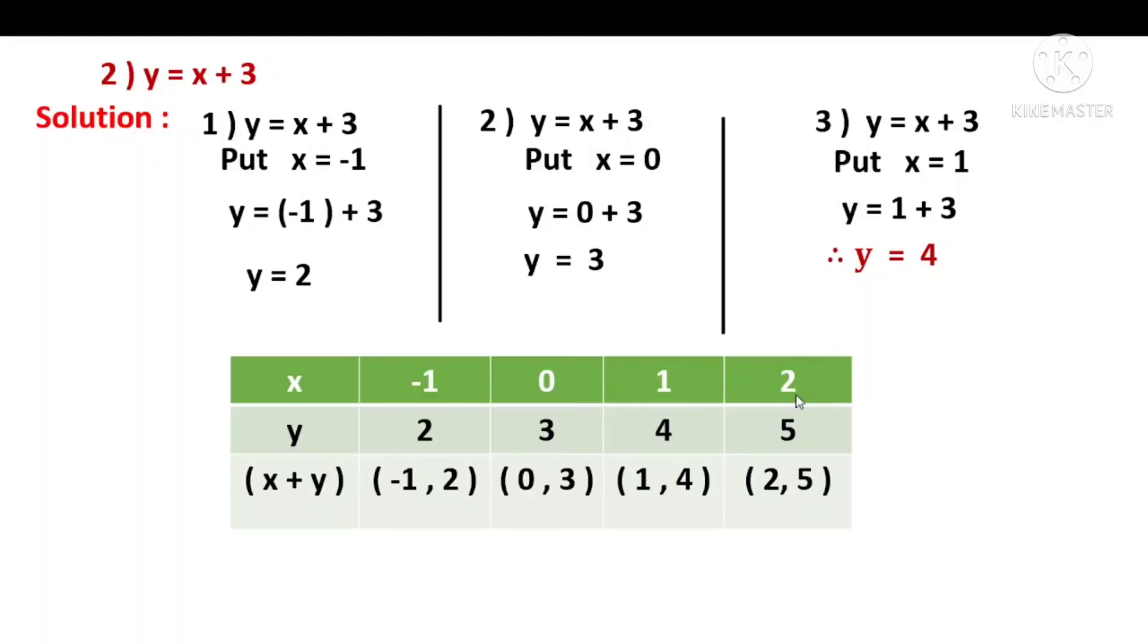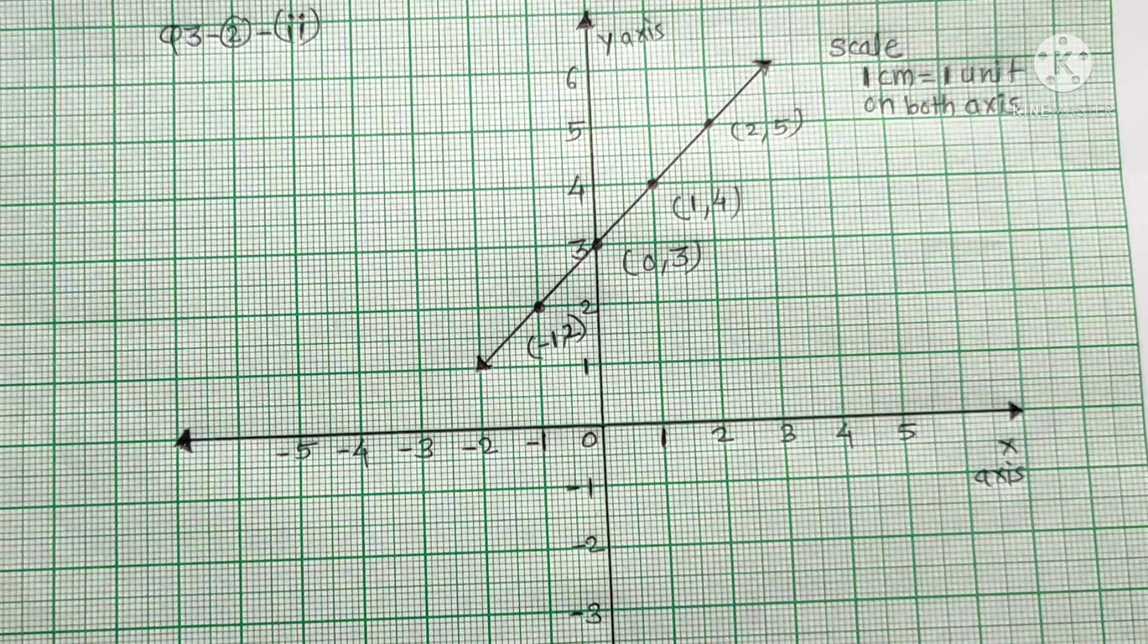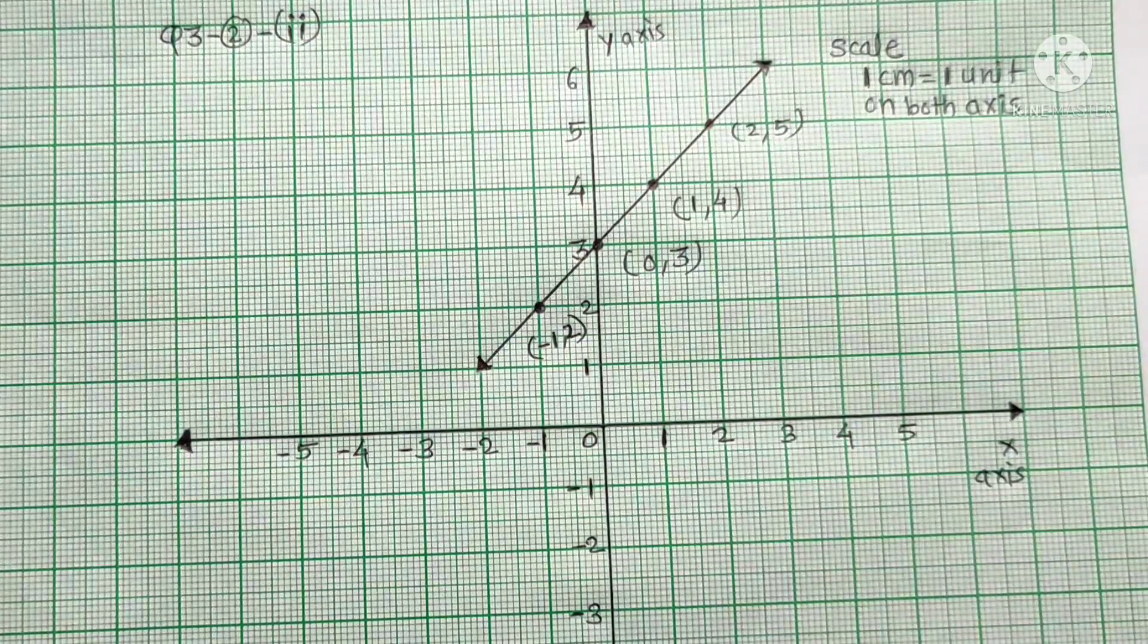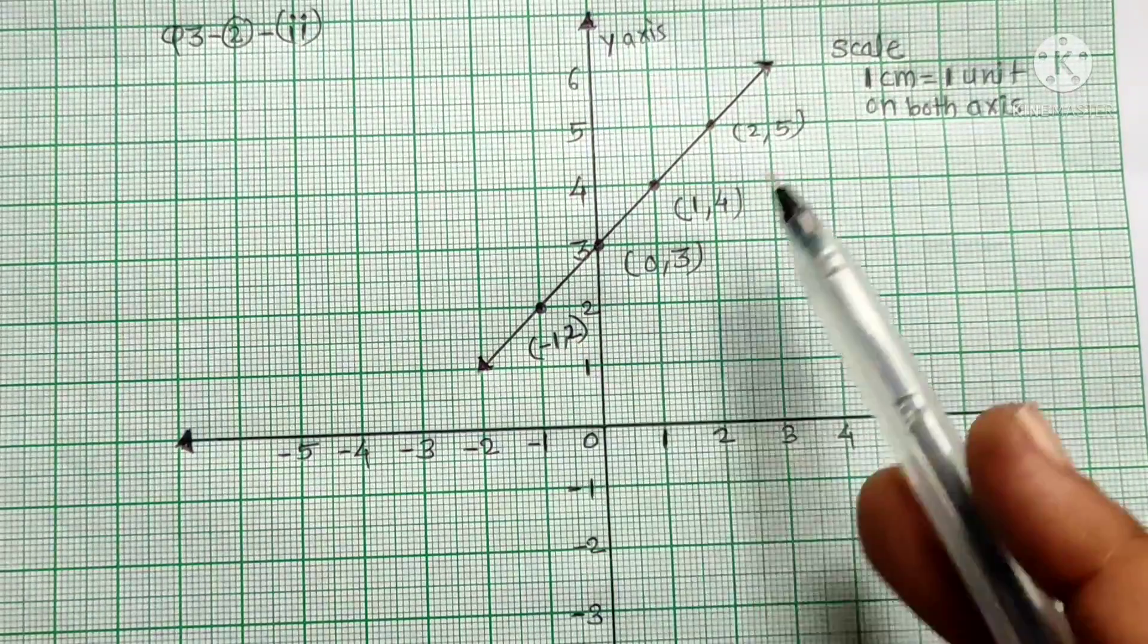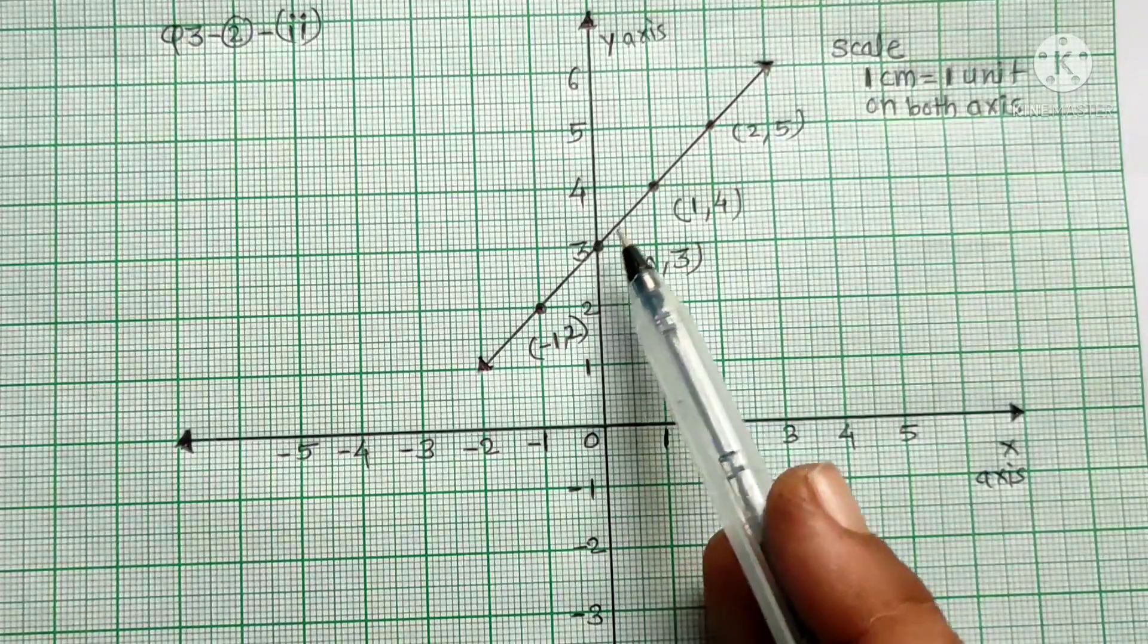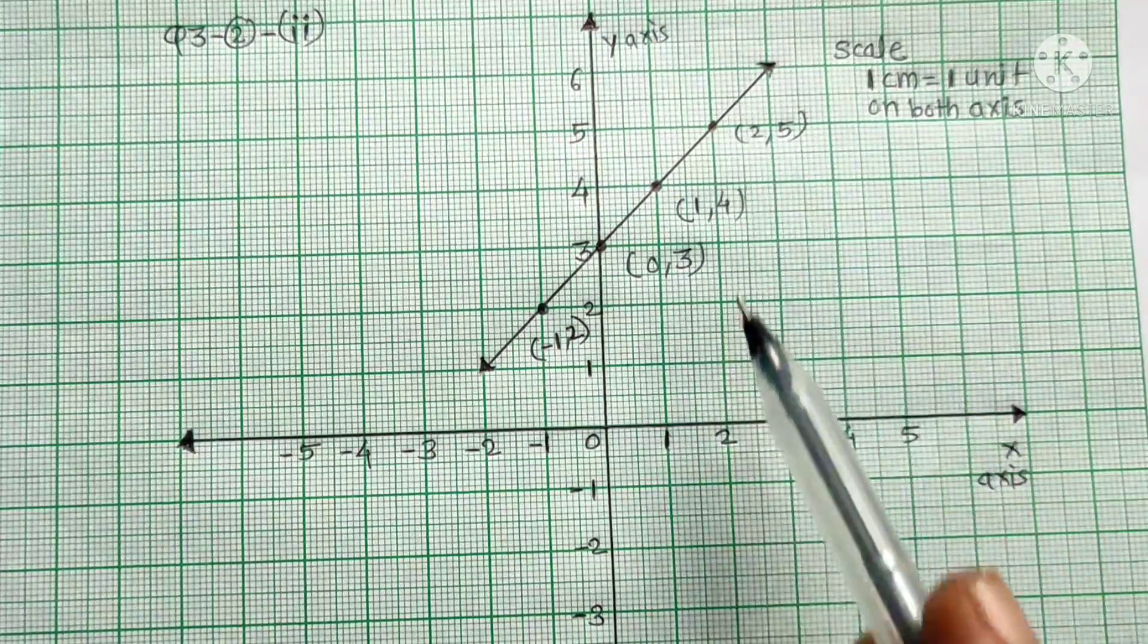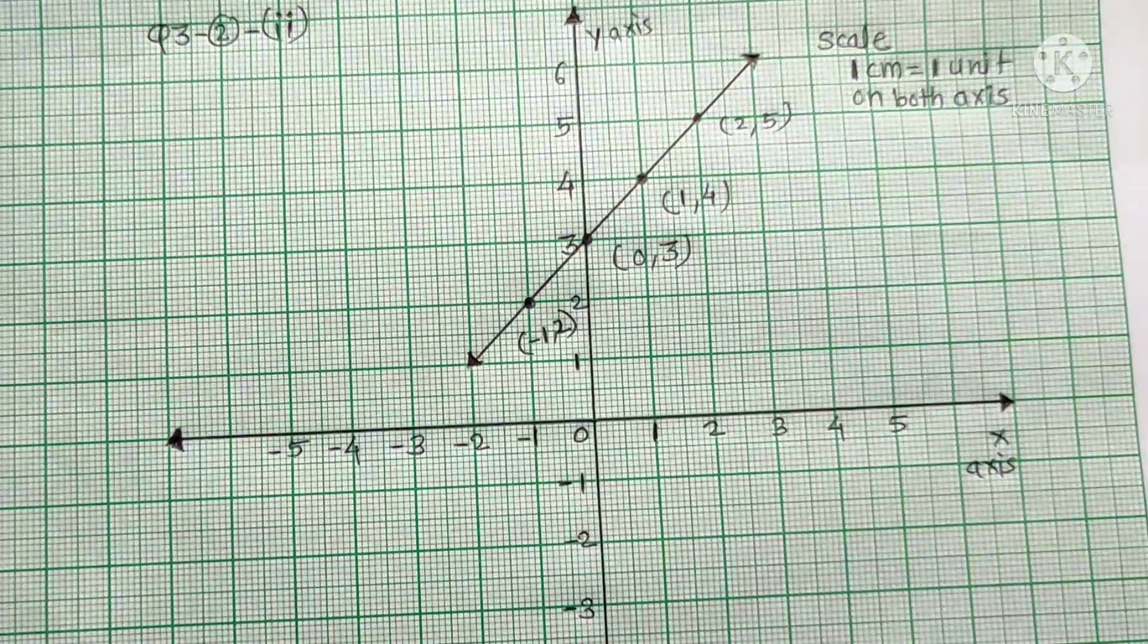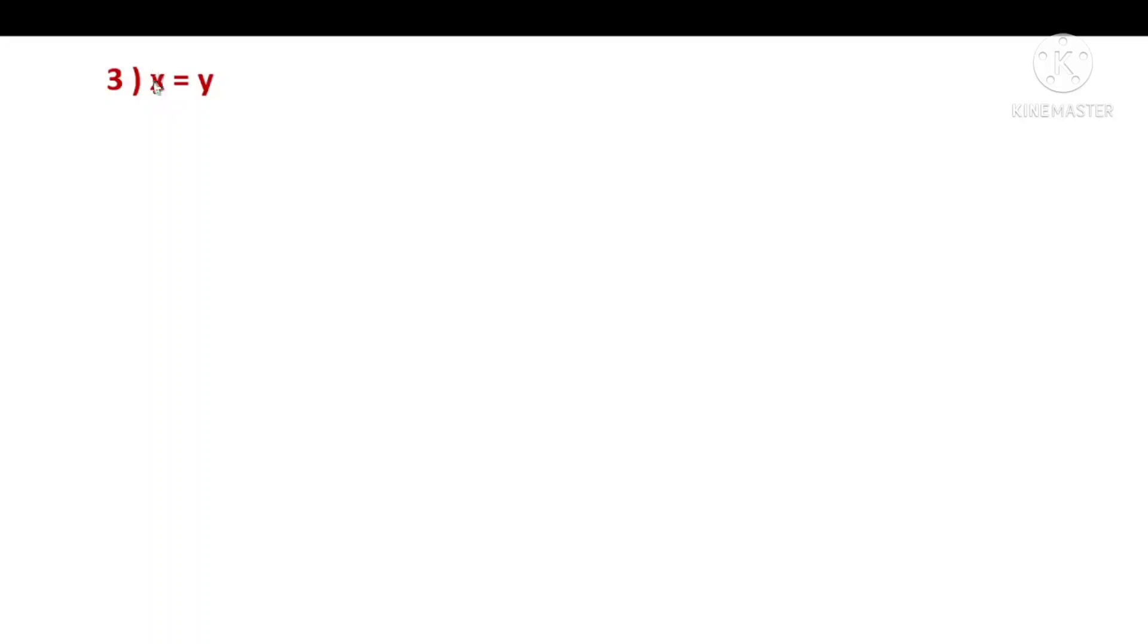Plot points on graph paper: minus 1 comma 2, then 0 comma 3 on y-axis, then 1 comma 4, then 2 comma 5. Plot these 4 points and draw the line.